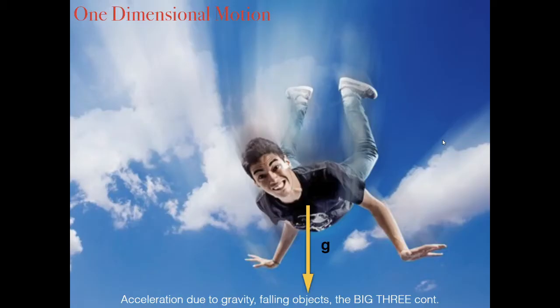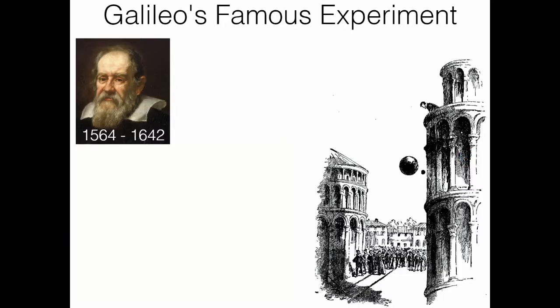Hey everybody, welcome to Tudor Terrific. This is the final video, lesson 5 in my second unit in my physics course on one-dimensional motion. In this final video for this chapter, we're going to look at falling objects, bringing acceleration due to gravity specifically into our discussion of one-dimensional kinematics. We're still going to be doing problems with the big three, so let's get started.